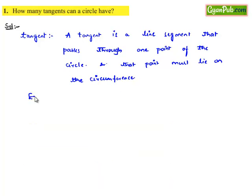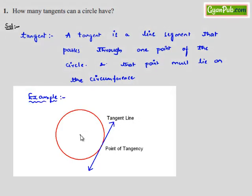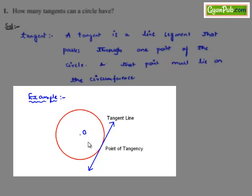Let us consider the following example. Here we have a circle with center O, and we have a line passing through one point of the circle. Therefore, it is called a tangent line.